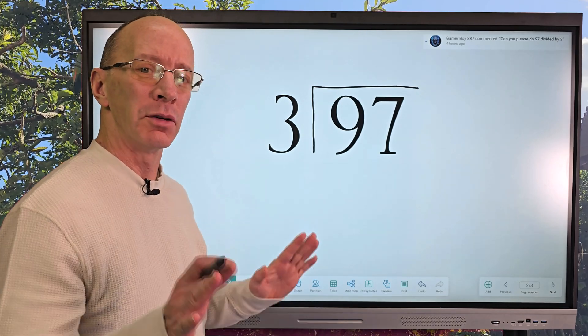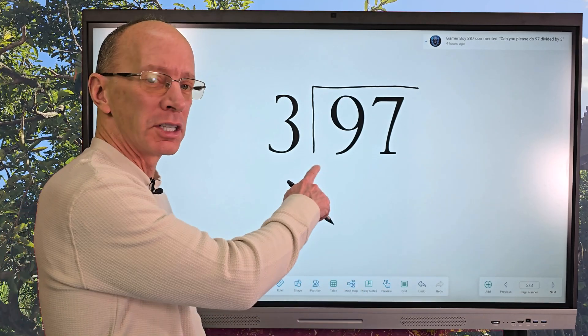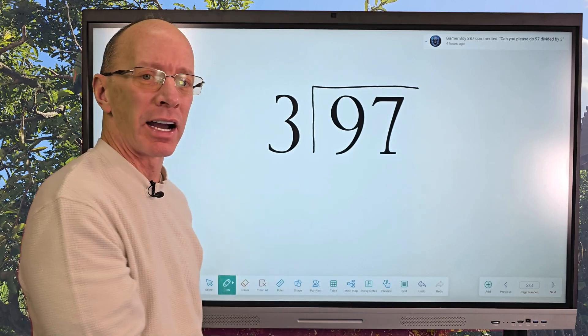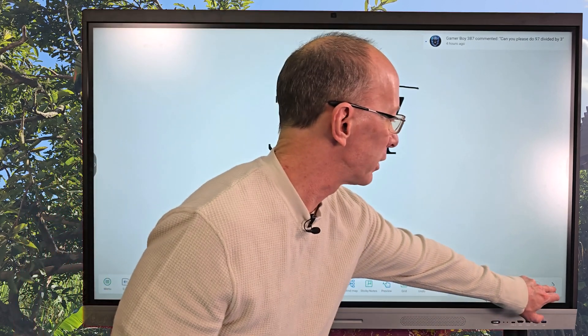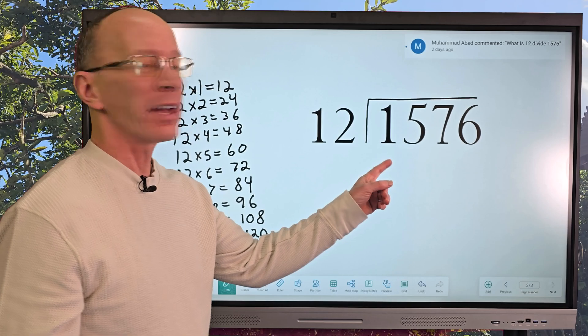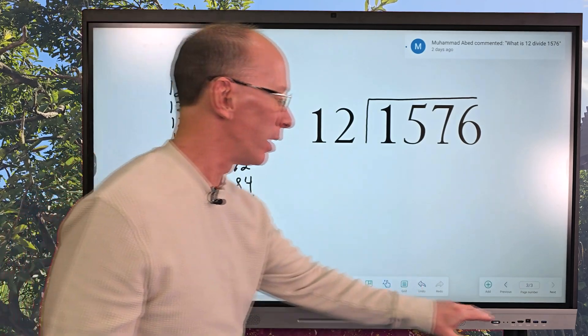Hey, welcome to the show. Today on the show we're going to be doing some division. The first division problem I have is 97 divided by 3, and then our second one that we're going to be doing is 1,576 divided by 12.